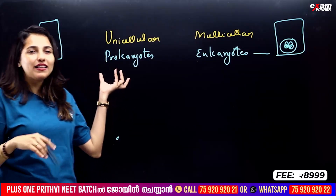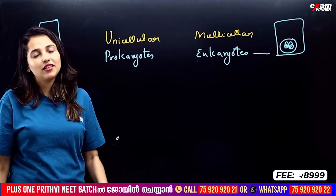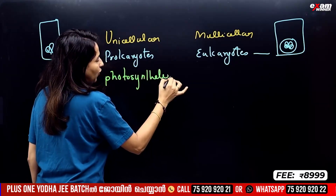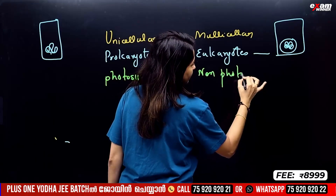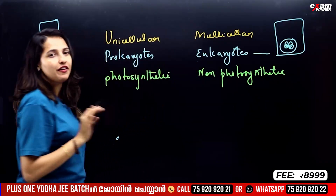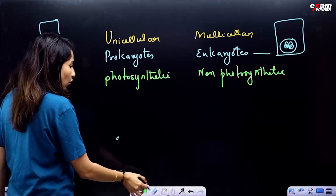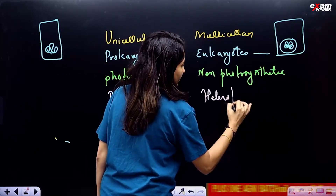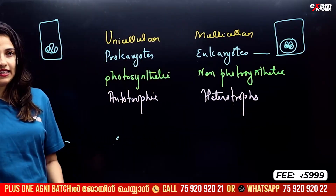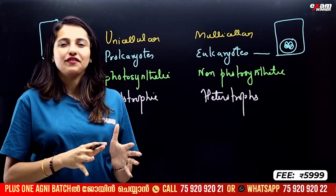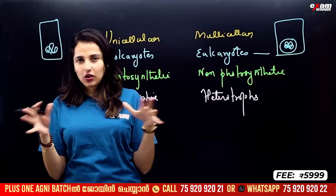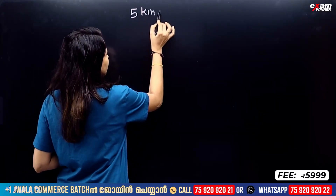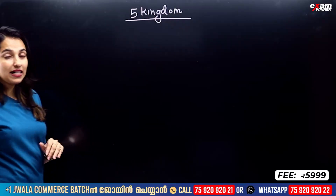This is the bacteria — prokaryotes. But it is not a plant group, and the question is photosynthesis. Non-photosynthetic — a large group. Plants — photosynthesis. Fungus — a large group. Autotrophic — a large group. Heterotrophs — a large group. This is one question: this is a classification. Let's examine it.